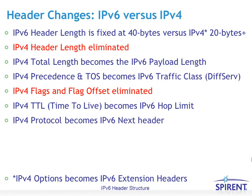The IPv4 protocol field becomes the IPv6 next header field. As mentioned earlier, IPv4 options become IPv6 extension headers, and the next header field directly indicates that. IPv6 next header values also coincide with IPv4 protocol values for TCP and UDP — for example, a value of 6 and 17 respectively.